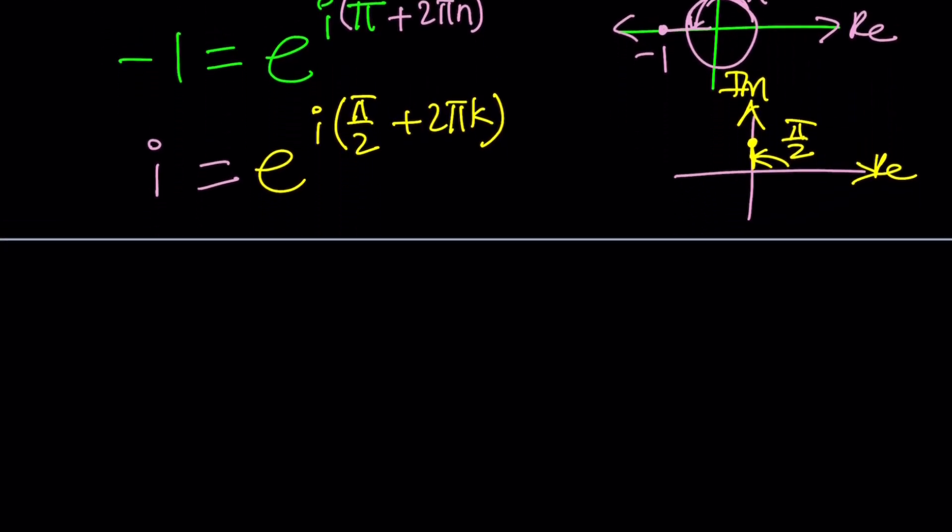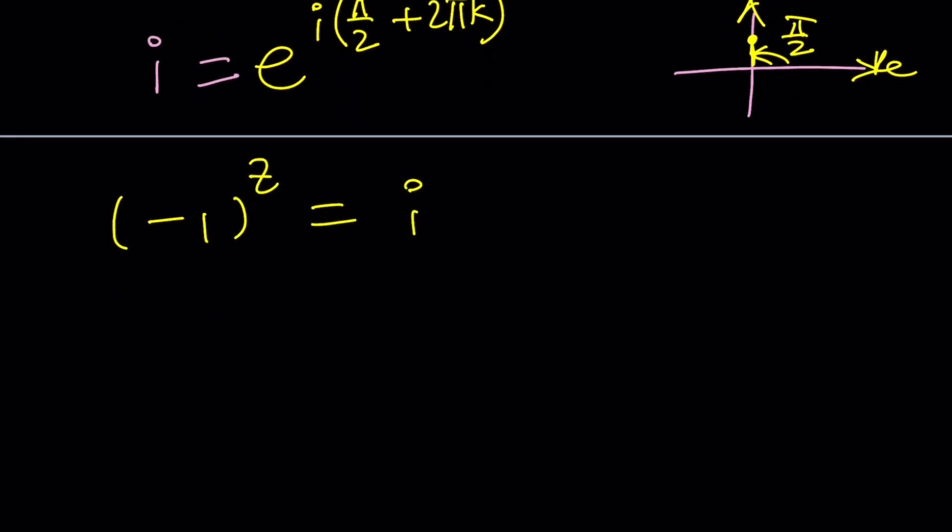So now let's plug this in. We have negative 1 to the power z equals i. Negative 1 will be replaced with e to the power i times pi plus 2 pi n. Then we're going to raise it to the power z which is just going to bring an extra factor and i can be written as e to the power i times pi over 2 plus 2 pi k.